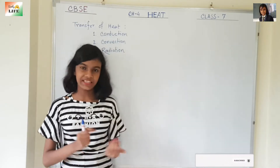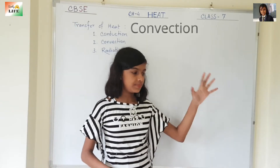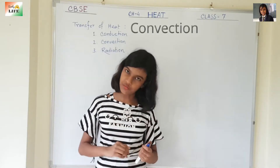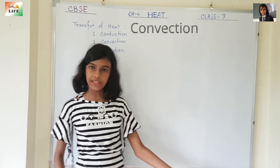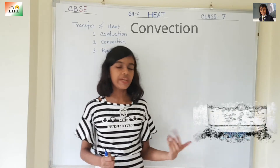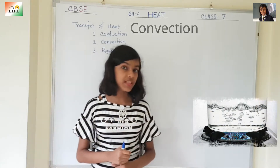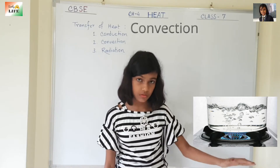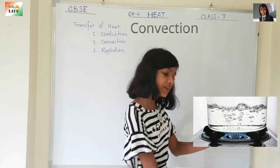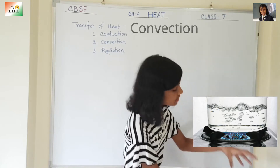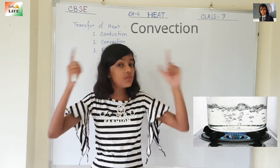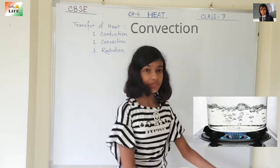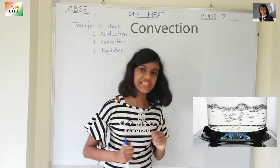So here comes an activity. Let's take a beaker — a beaker half full of water — and you are heating the beaker. What will happen first? The water which is near the flame, meaning the water at the bottom of the beaker, is near the flame. So this water will get heated first. The whole water in the beaker will not get heated at once — only the water at the bottom, which is near the flame, will get heated first.